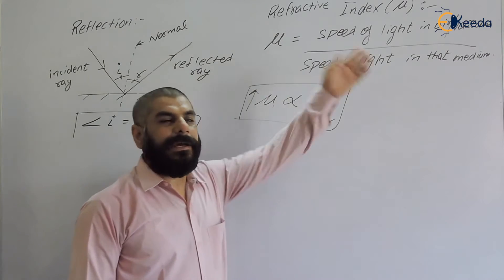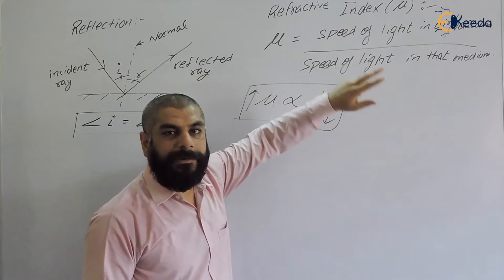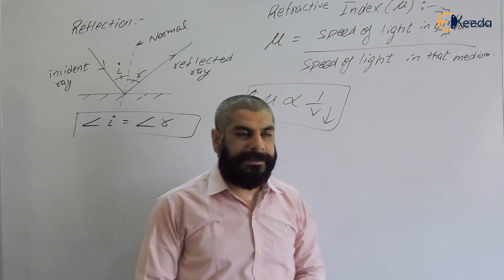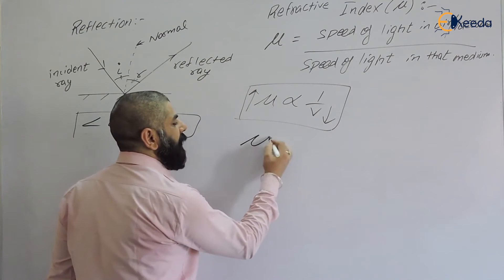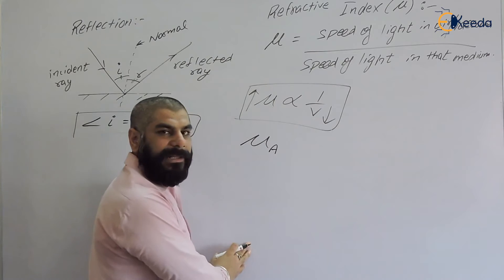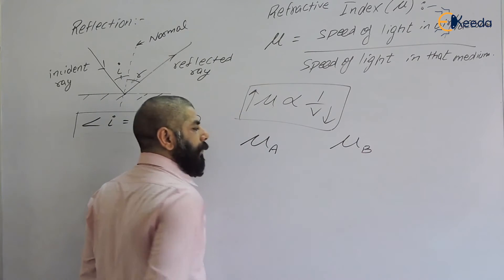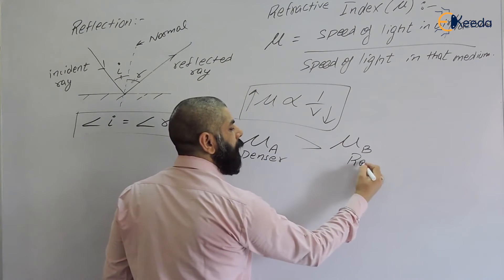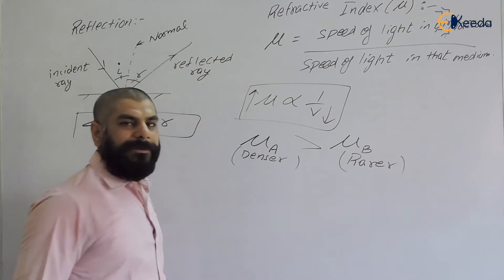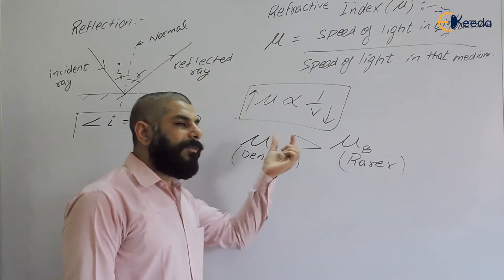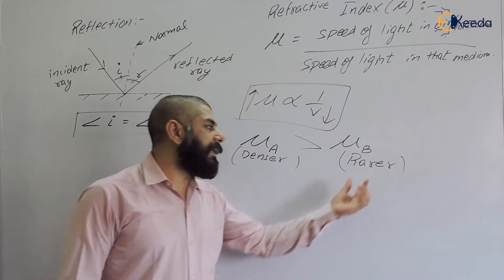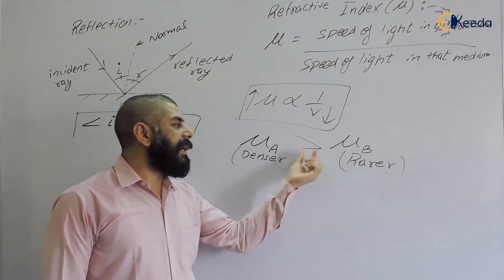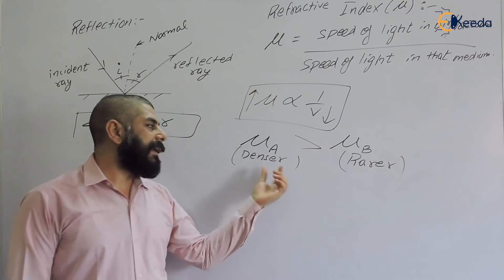The maximum speed of light is in air, so the minimum value of refractive index is 1. Suppose we have two media: medium A with refractive index mu-A and medium B with refractive index mu-B. If mu-A is greater than mu-B, then medium A is called the denser medium and medium B is the rarer medium. In a denser medium, the speed of light is less. In a rarer medium, the refractive index is less and the speed of light is greater compared to the denser medium.